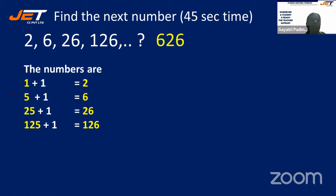So: 5 to the power 0 is 1, 5 to the power 1 is 5, 5 to the power 2 is 25, 5 to the power 3 is 125, 5 to the power 4 is 625. The pattern is adding 1 to each power of 5, so the next answer is 626.